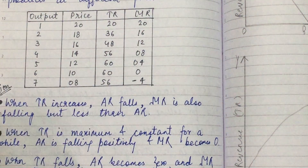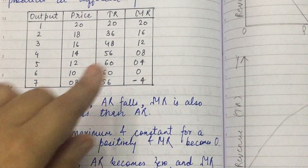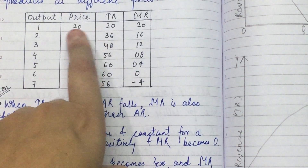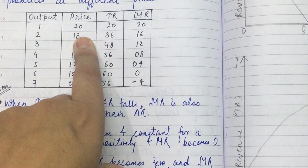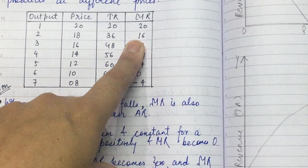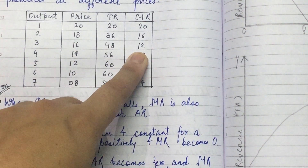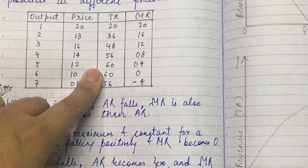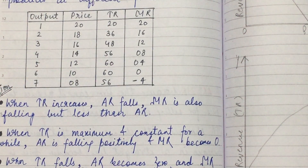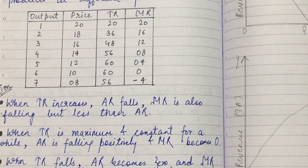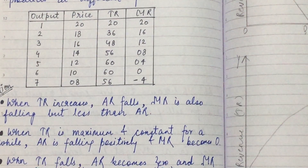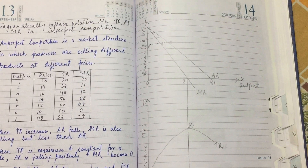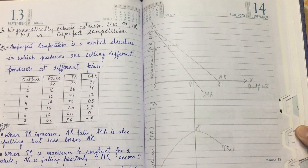The third thing is marginal revenue. We have our TR values, and marginal revenue is the change in TR. When TR goes from 20 to 36, MR = 36 − 20 = 16. We continue this for each unit to get the MR column.